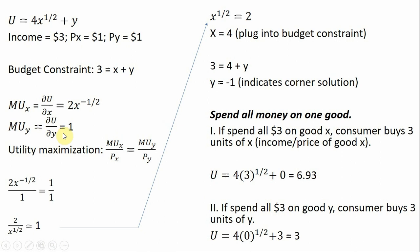Marginal utility of good Y, we're just going to get 1. Utility maximization requires that the marginal utility per dollar is equal across all goods. So here's our utility maximization condition, and now I'm just going to make some substitutions into that.